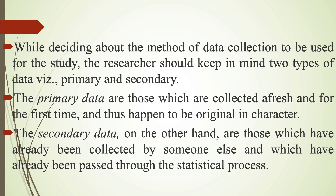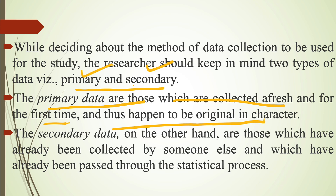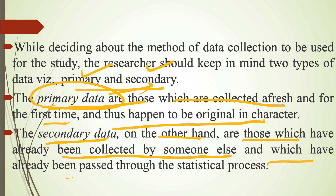While deciding about the method of data collection, the researcher should keep in mind two types of data: primary and secondary. Primary data are those which are collected afresh and for the first time, and are thus original in character — collected through investigation, questionnaires, interviews, or different methods. Secondary data, on the other hand, are those which have already been collected by someone else and have already passed through the statistical process. Secondary data is already available in online or offline mode, in the form of books, magazines, or information available through internet surfing.